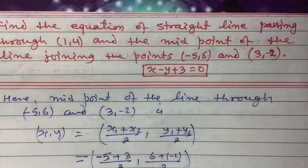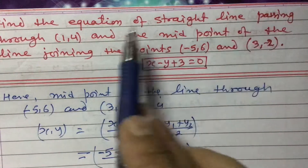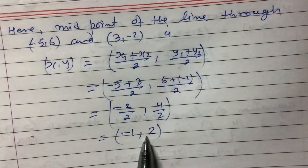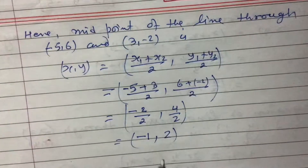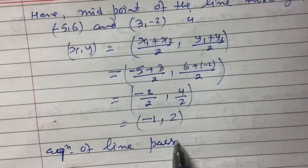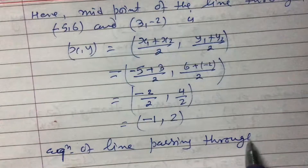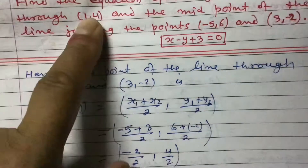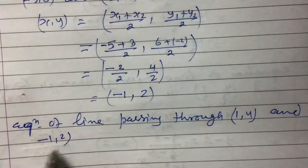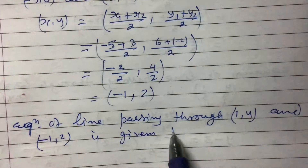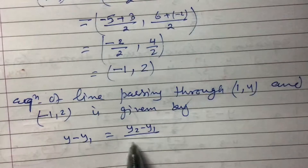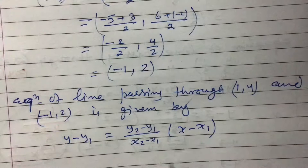Now we are asked to find the equation of the straight line passing through (1, 4) and the midpoint (-1, 2). So the two points the line passes through are (1, 4) and (-1, 2). We apply the two-point formula: y minus y1 equals (y2 minus y1) divided by (x2 minus x1), multiplied by (x minus x1).